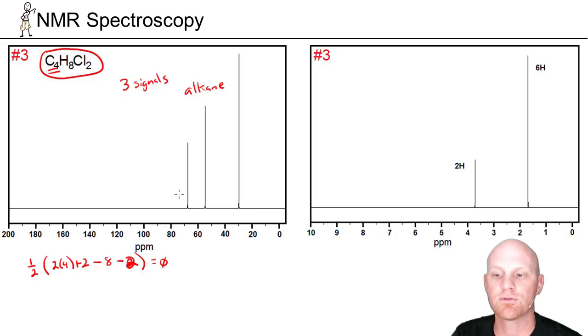All 3 of these signals are down here in the alkane region. Some of them are pretty far downfield in the alkane region, so there's probably some that are bonded to electronegative atoms, like the 2 chlorines in our structure in this case, but still all in the alkane region of the spectrum.